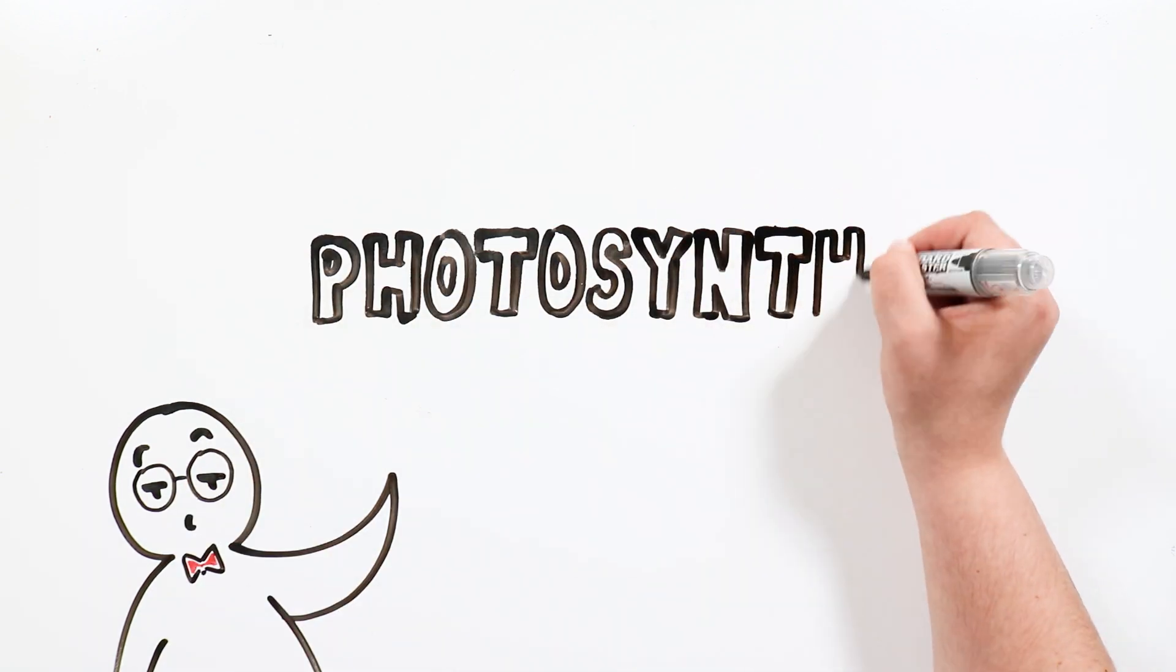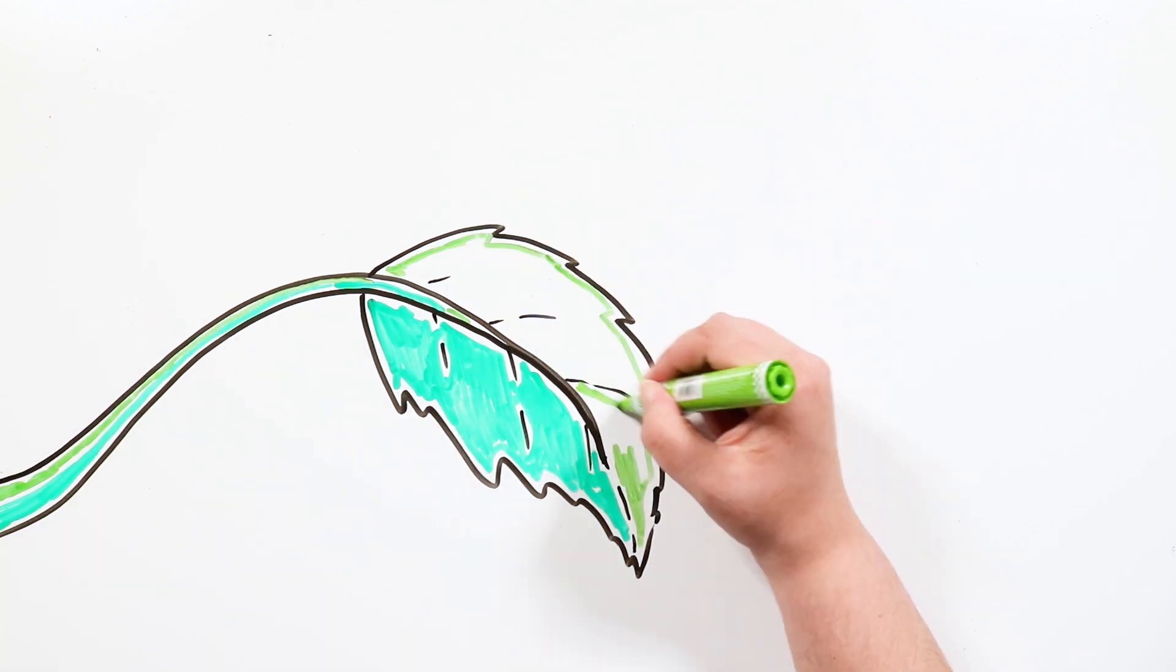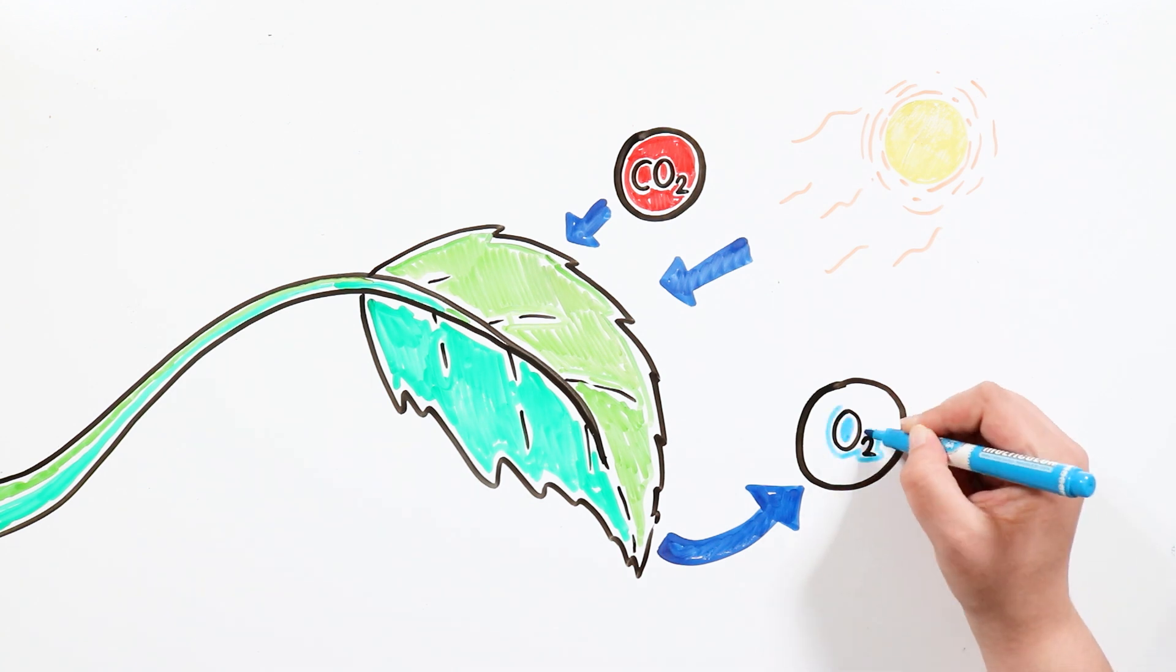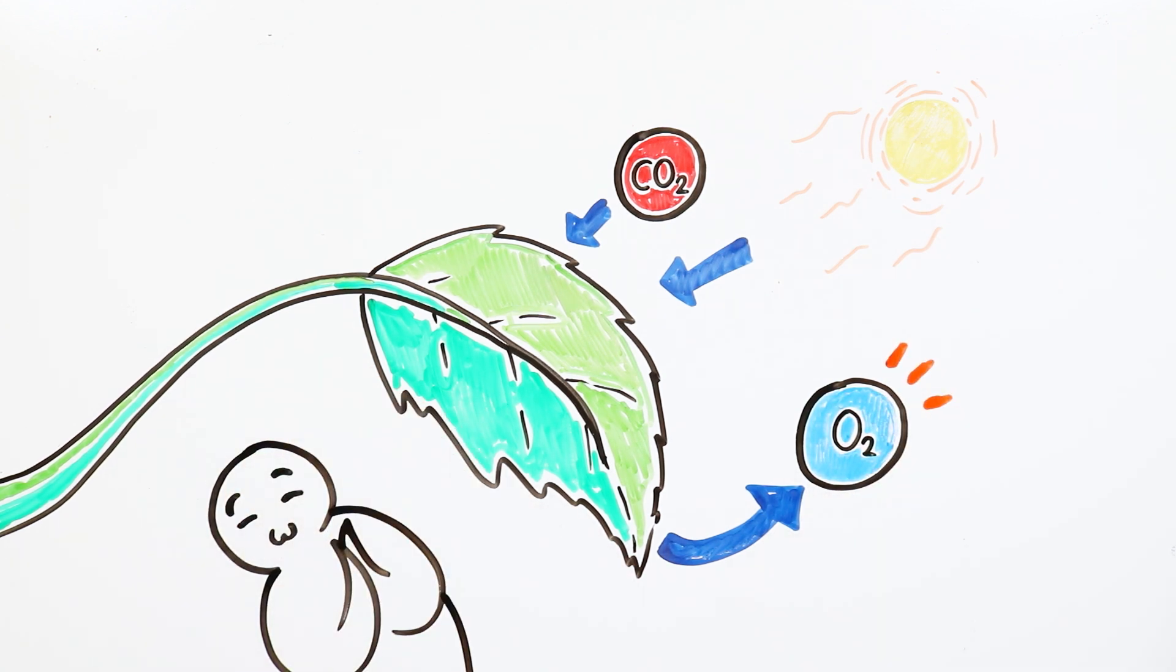We were all taught in school about photosynthesis. The way in which plants get their food, by absorbing the sun's rays and carbon dioxide in their leaves, and at the same time producing the oxygen we breathe. Thank goodness they are doing us that favor!